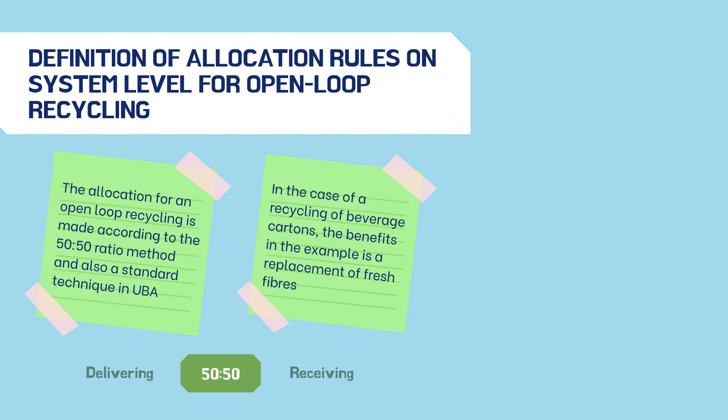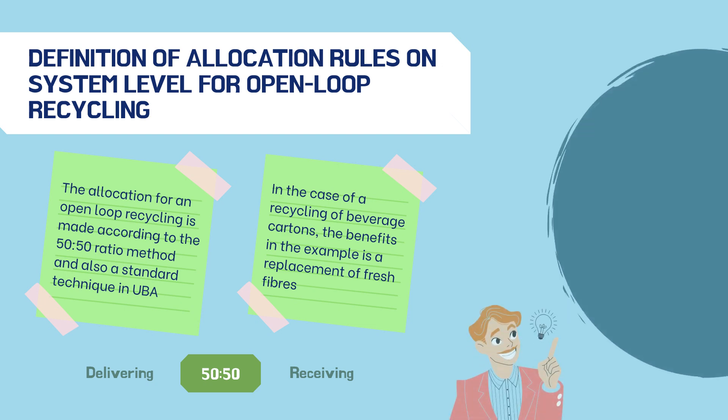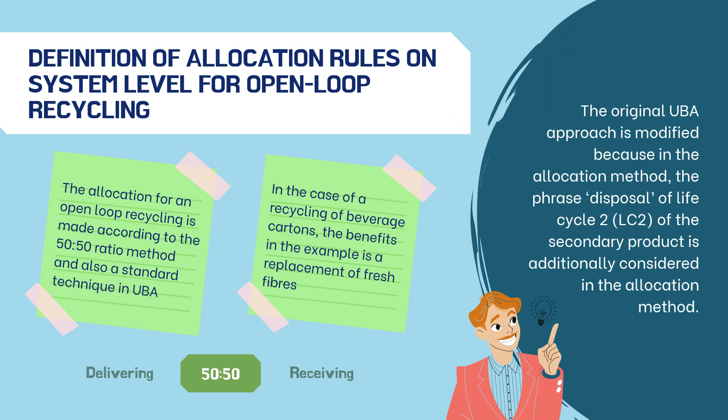In the case of recycling of beverage cartons, the benefit in the example is a replacement of fresh fibers. This benefit is technically assessed in the beverage carton distribution system in the form of a credit. The height of the credit amounts to 50 percent of the substituted fresh fiber production proportion due to the employment of secondary fibers. However, in this study the original UBA approach is modified because the disposal phase of Life Cycle 2 (LC2) of the secondary product is additionally considered in the allocation method.